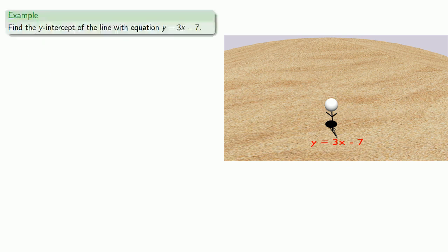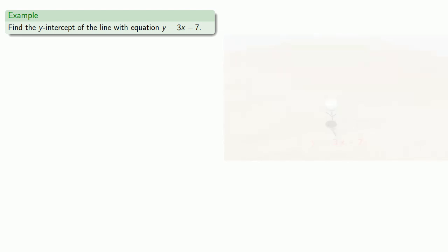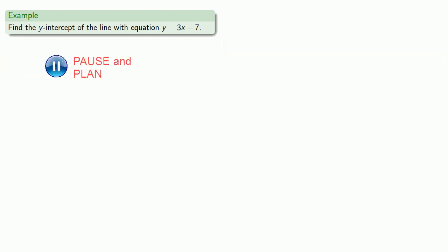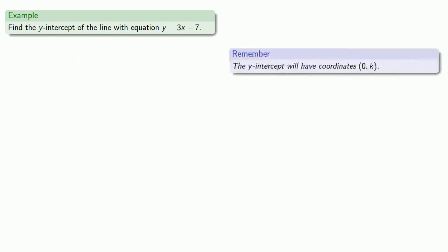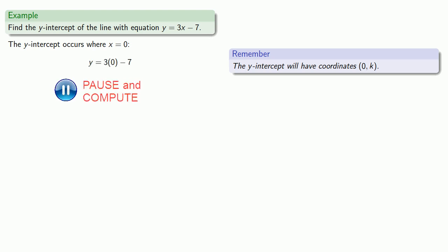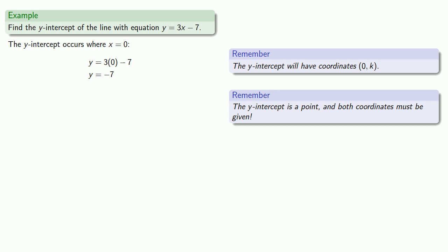For example, suppose you're given the equation y equals 3x minus 7, and you want to find the y-intercept. The y-intercept occurs when x equals 0, so we substitute that in and find our y-value. The intercept is a point, so the intercept is going to be (0, negative 7).